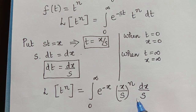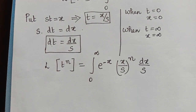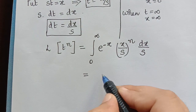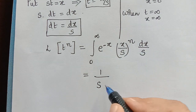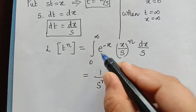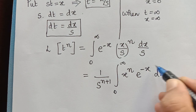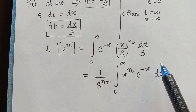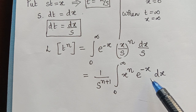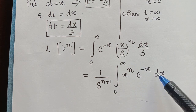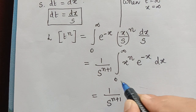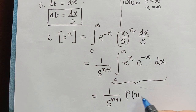Now let us integrate this. Since s is a constant it can be taken outside the integral. The power of s in the numerator is n and there is one more s from dt, giving 1 over s to the power n plus 1, times the integral from 0 to infinity of x to the power n times e to the power negative x dx. We observe that this integral is a gamma function — we learned in a previous semester that gamma of n plus 1 equals this integral, so it can be replaced by gamma of n plus 1.